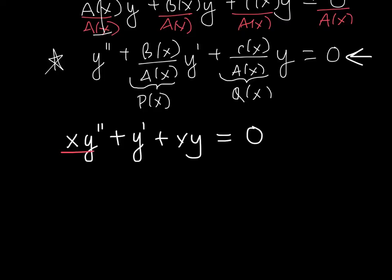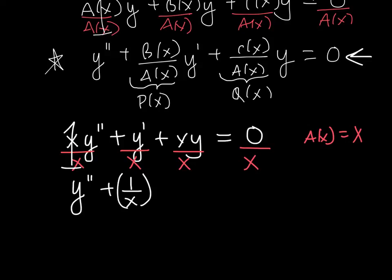So, my coefficient is not 1, so I'm going to go ahead and divide by, well, that's just going to be x. My A(x), in this case, is x. That's a big 1, so we get y'' + 1/x y' + 1 y = 0.